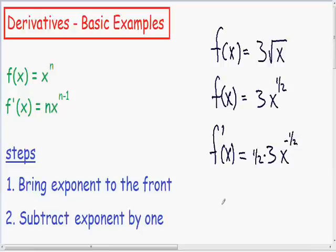So now we have taken the derivative using the power rule and you always need to simplify this as much as possible. I'm going to simplify this a little further. Here the 1 half multiplied by the 3 is 3 over 2.